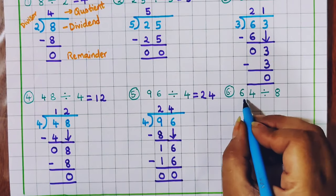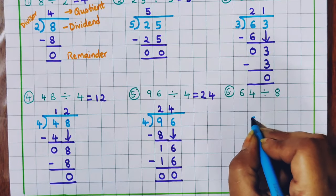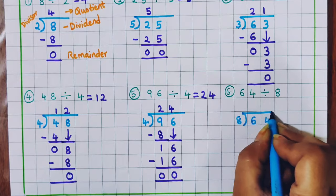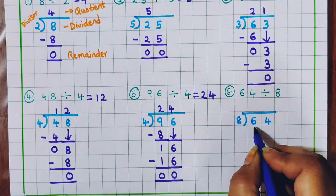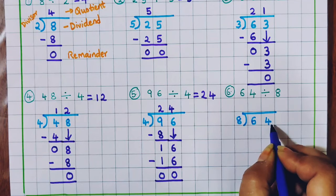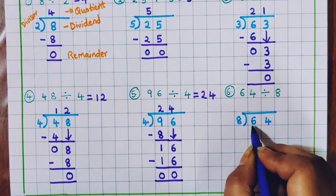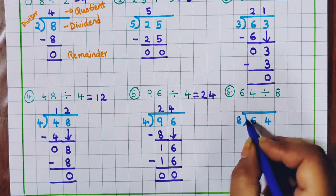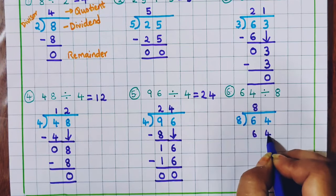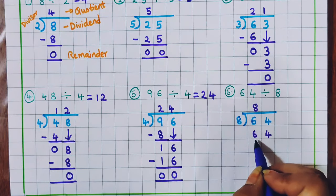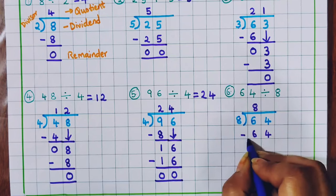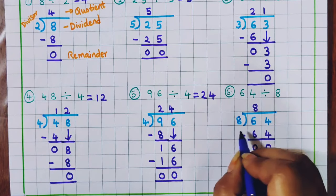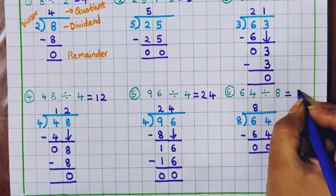Now let's do one more problem: 64 divided by 8. In the table of 8, do we get 6? No, it is a smaller number, so we are going to check 2 digits. Now 64 — in the table of 8 do we get 64? Yes, 8 eights are 64. Now let's do minus and we get 0 as the remainder. So 64 divided by 8, the answer is 8.